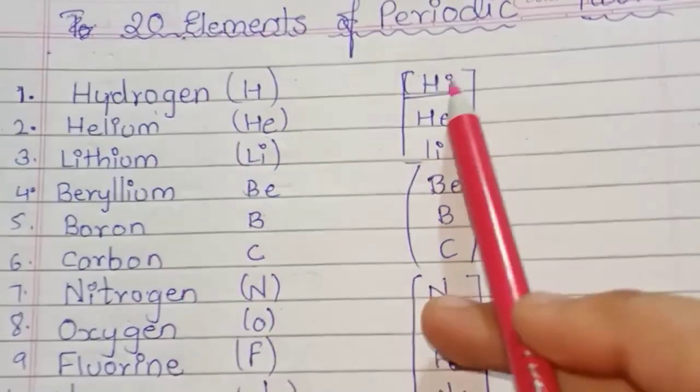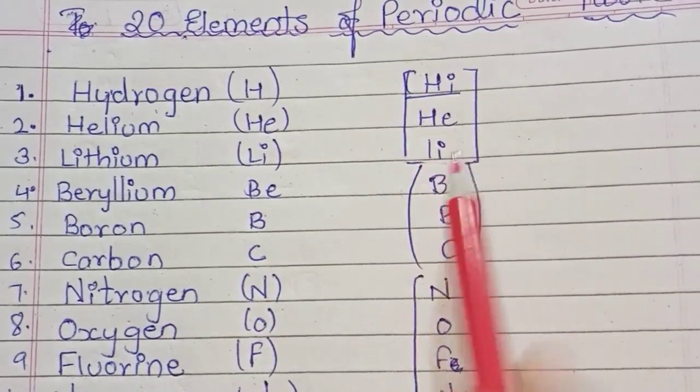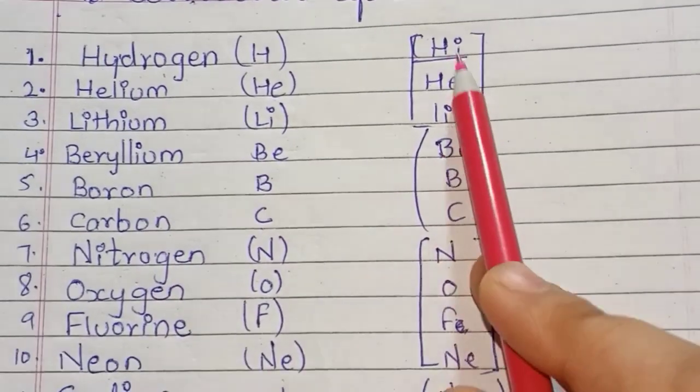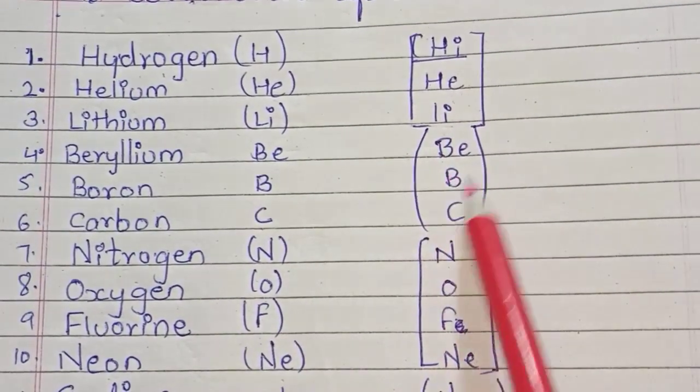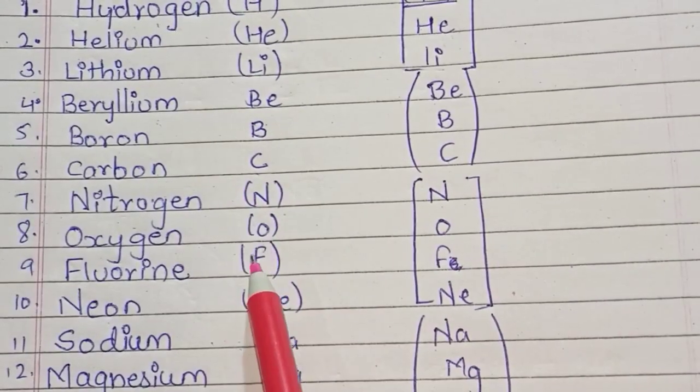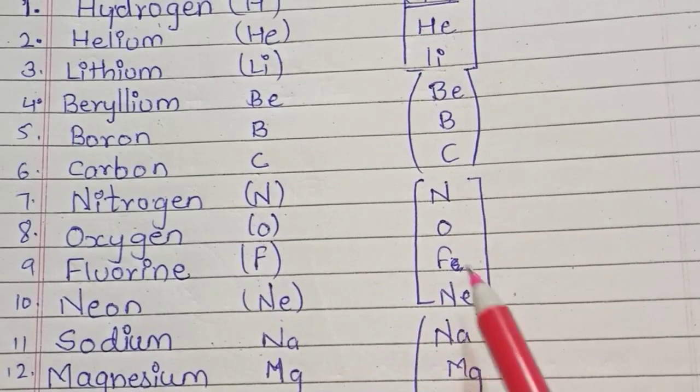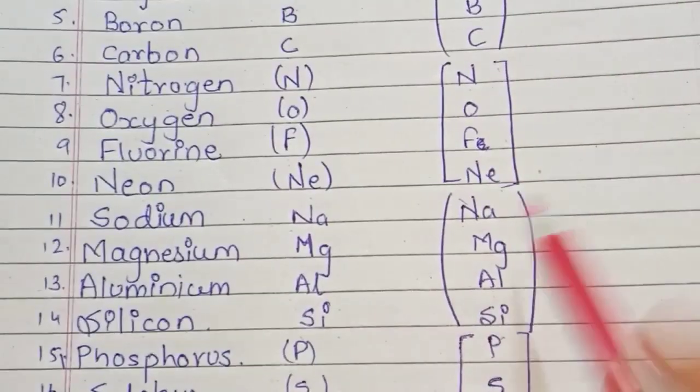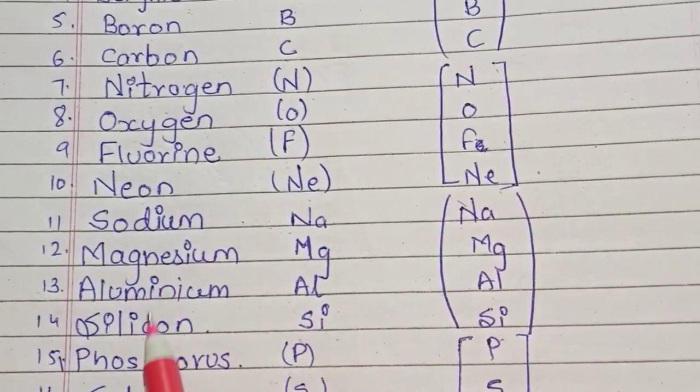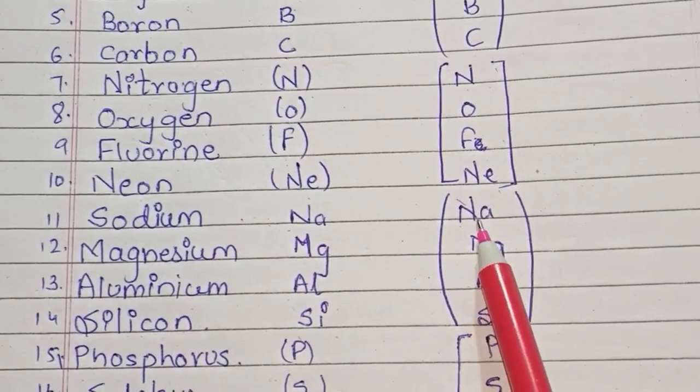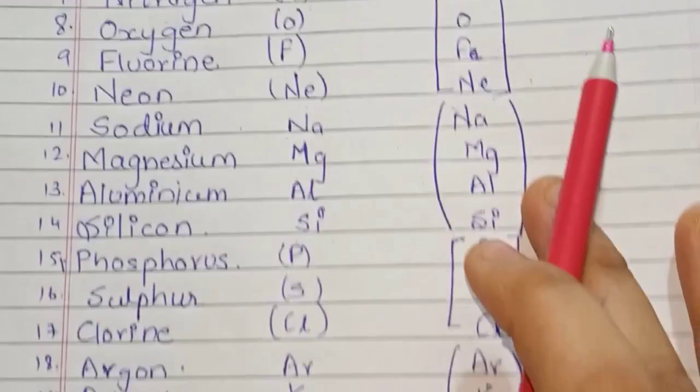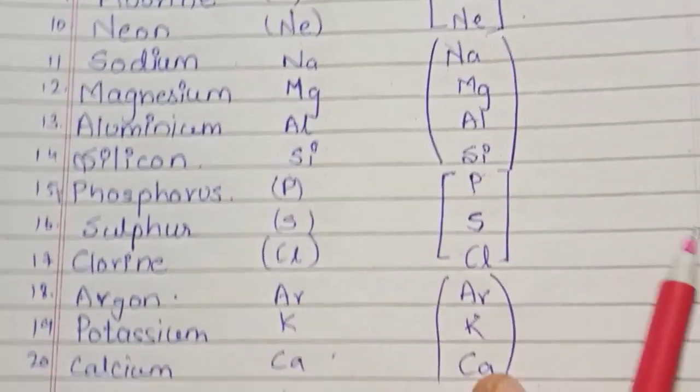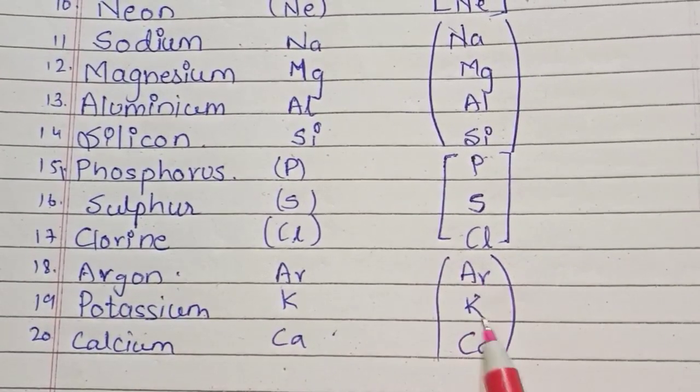So we will start with these groups. We will take Hydrogen, Helium, and Lithium - Hi Heli. Beryllium, Boron, Carbon - BBC. Nitrogen, Oxygen, Fluorine, Neon - No Funny. Next group: Sodium, Magnesium, Aluminium, Silicon - Na Maag Alci. Phosphorus, Sulfur, Chlorine - PSCL. Argon, Potassium, Calcium - Ar Ka Ka.